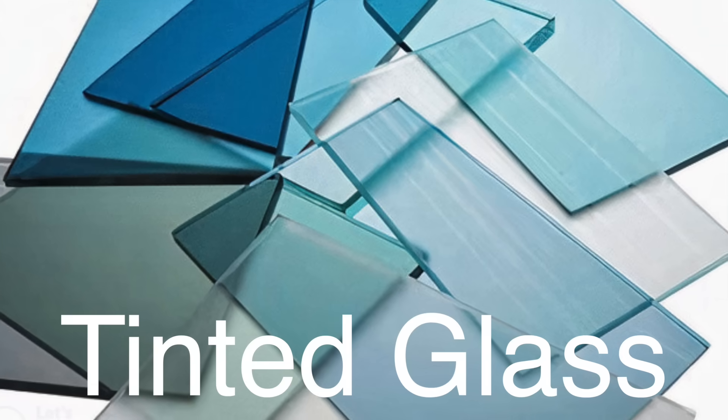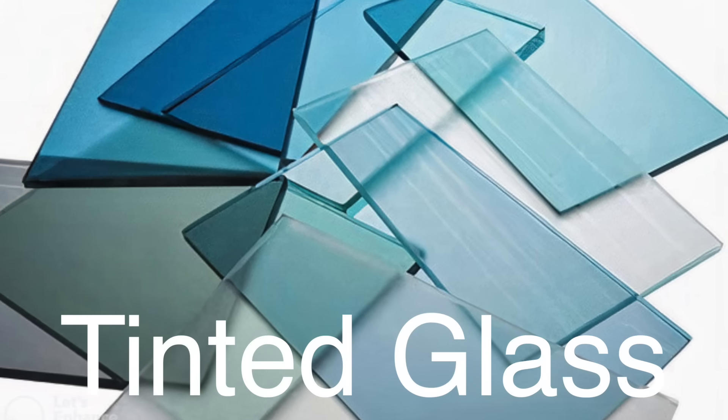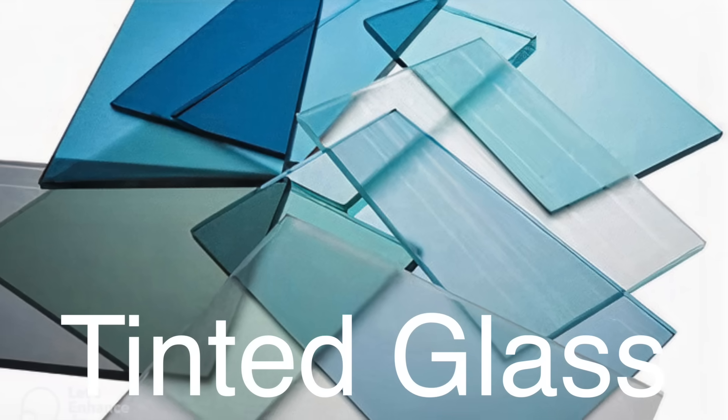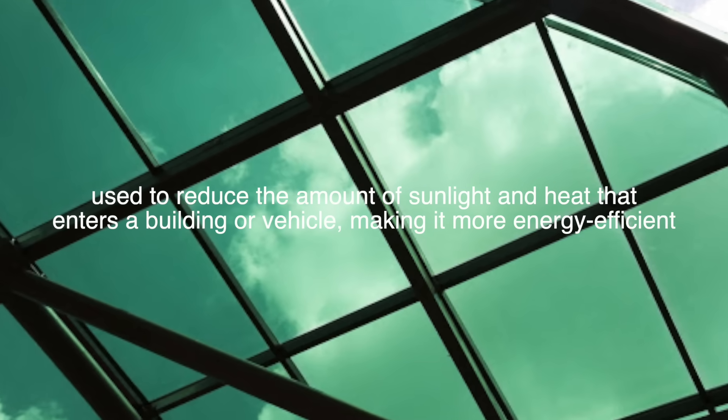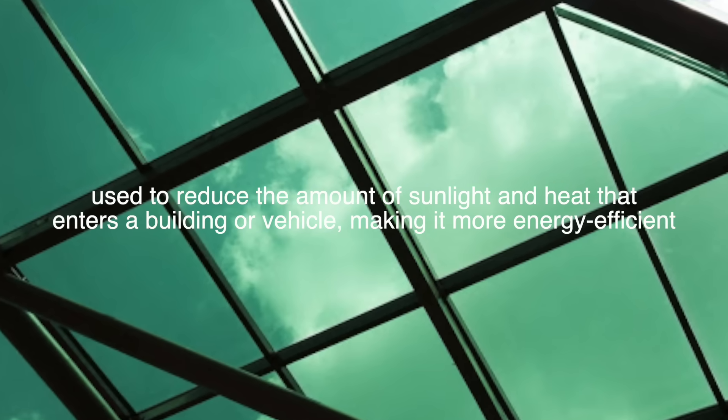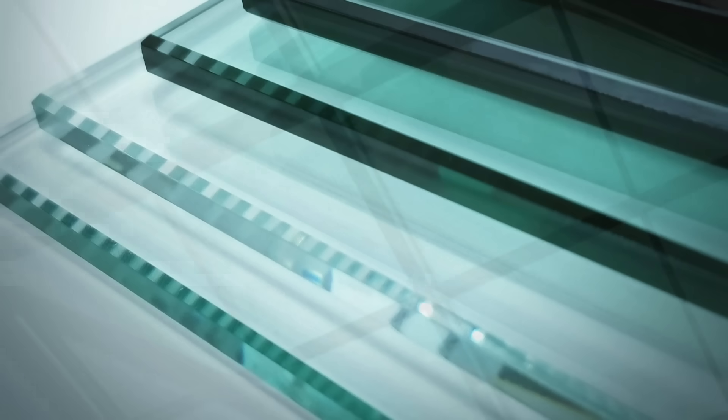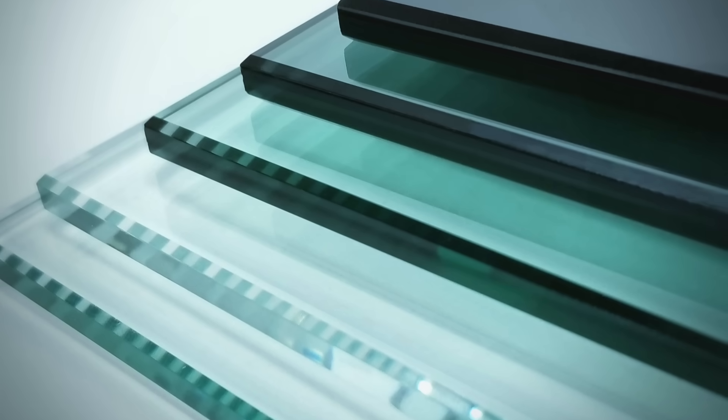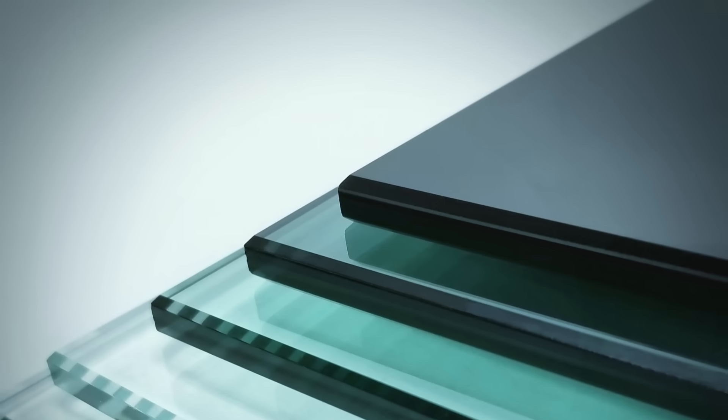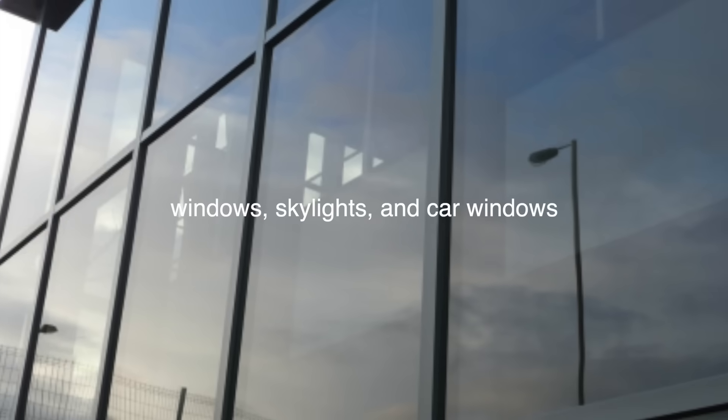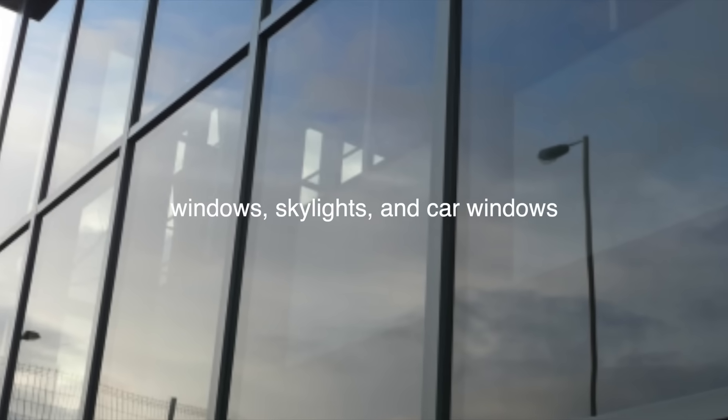There is also tinted glass, which has color added during the manufacturing process. It is used to reduce the amount of sunlight and heat that enters a building or vehicle, making it more energy efficient. The tinting can be done in a variety of colors, with different tints providing different levels of light and heat reduction. It is often used in windows, skylights, and car windows to reduce glare and improve energy efficiency.